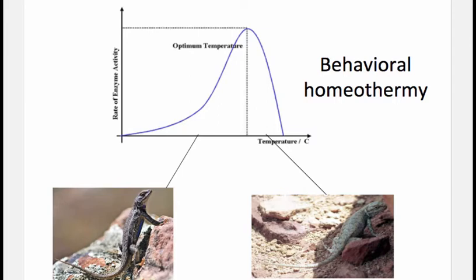Why is elevated body temperature a good thing at all? It has a lot to do with enzymes. The relationship between enzyme activity and temperature shows increasing enzyme activity as temperature increases — a J-shaped curve. This increase has everything to do with kinetics: the higher the temperature, the more encounters between catalyst and substrate, making the relationship nonlinear and J-shaped.